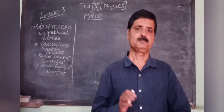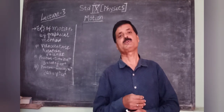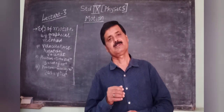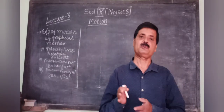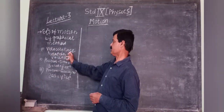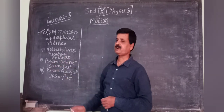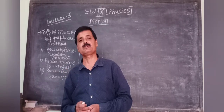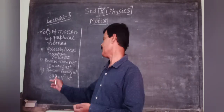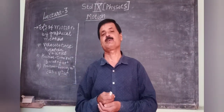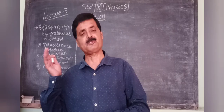Good afternoon students. Today we have to prove by graphical method the equations of motion. In the previous class, we talked regarding these three formulas. First, the velocity-time relation v = u + at. Second, the position-time relation s = ut + ½at². Third, the position-velocity relation v² - u² = 2as. Just I am starting from the very first.